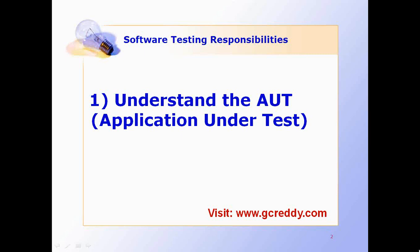Next, understand network concepts — co-existence of the software with other software. Next, data processing and management. The first responsibility, whether it is manual testing or test automation, is to understand the AUT — Application Under Test.